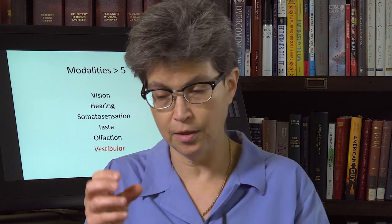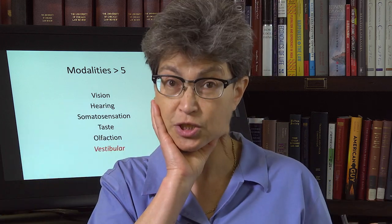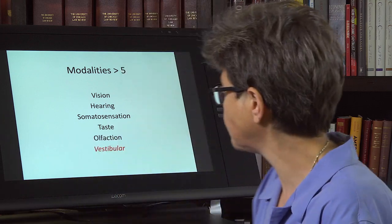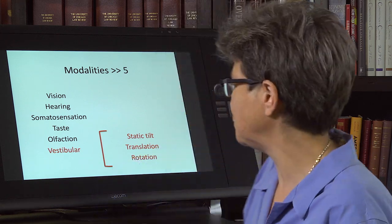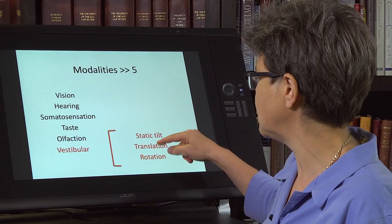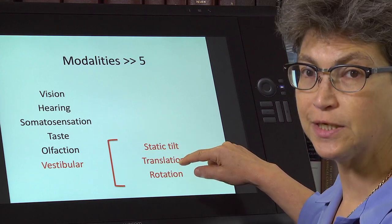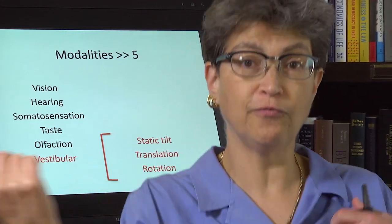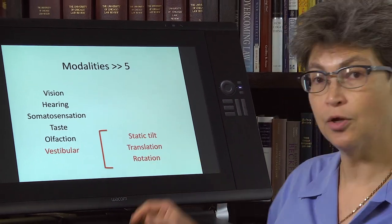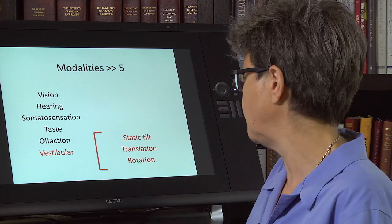The vestibular system co-occupies the inner ear with the cochlea and gives rise to our sense of position in space, head position, and head motion. Within it, there are several perceptual channels: static tilt, translation, and rotation. If the sense of rotation is off, it gives rise to vertigo; if translation is off, it can cause disequilibrium. There's also the sense of the head's position at rest.